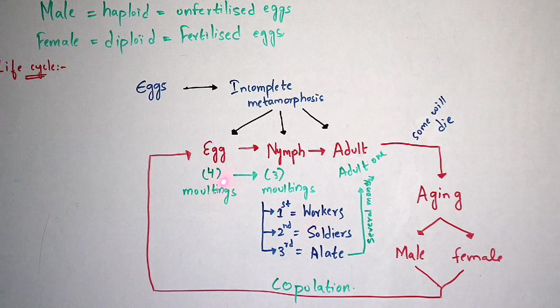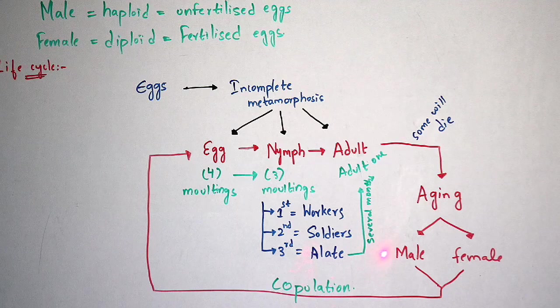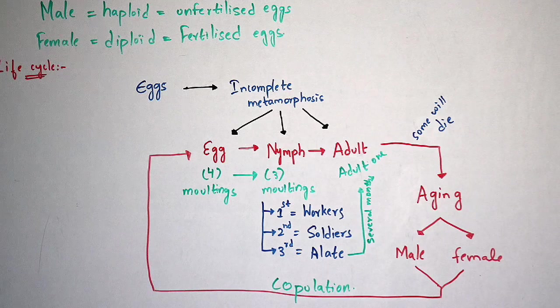The incomplete metamorphosis undergoes three types of moultings, again forming workers, soldiers and alates. Adults are developed again, and after adults undergo aging, some will die and some will not die. The surviving termites undergo aging and develop as king and queen. The king and queen undergo copulation, again forming eggs, and again the total life cycle gets repeated.